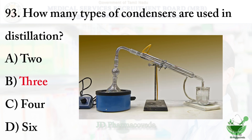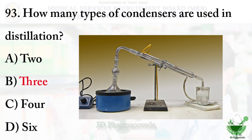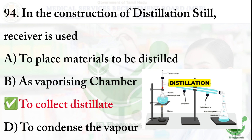Question number 94: in the construction of a distillation still, the receiver is used to — options are: option A — to place materials to be distilled, option B — as a vaporizing chamber, option C — to collect distillate, option D — to condense the vapor. The right option is option C: to collect distillate.